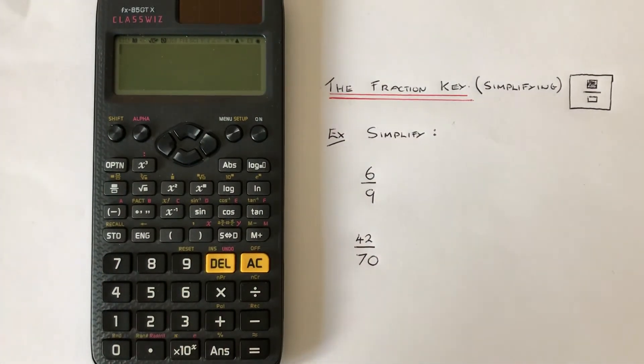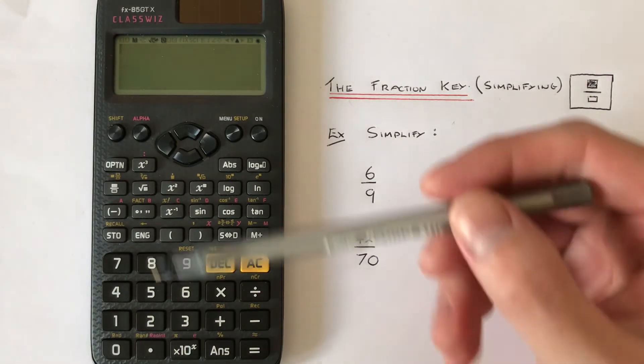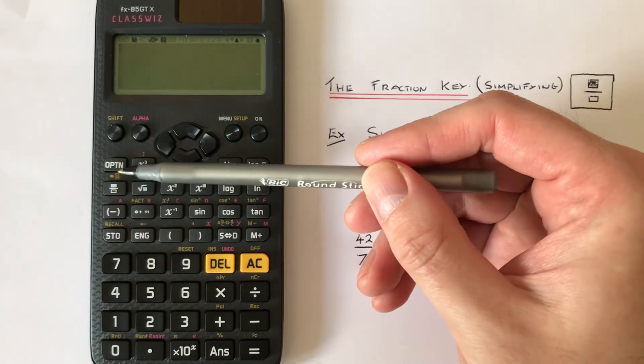Hi guys, welcome back. This is Maths 3000. I'm going to show you how to simplify a fraction on a Casio ClassWiz calculator. To do this, you'll need to use the fraction button located on the second row of the functions.